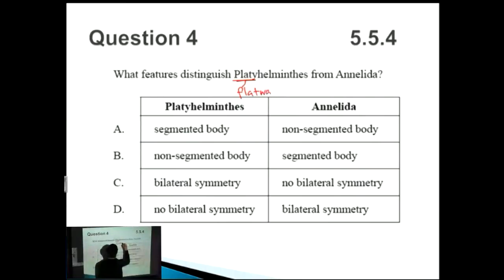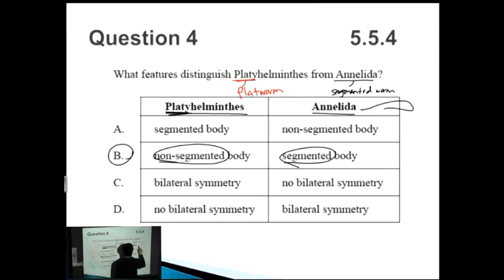So Platyhelminthes is actually a flatworm, so they're non-segmented, whereas Annelida is a segmented worm. If you know that, then straight away you know what to look for. Annelida: segmented body. Flatworm: non-segmented. Straight away you know that B is the correct answer. Platy means flat, so flatworm, and Annelida is the opposite. Think of earthworms with your segments on the side as well.